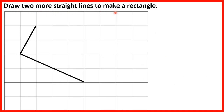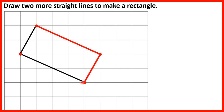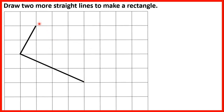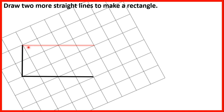Draw 2 more straight lines to make a rectangle. We can imagine that these two points will be 2 of the corners of the rectangle. To get from one point to the other, we can go across 1 and up 2. So if we take this point and go across 1 and up 2, we can see that the other vertex — the other corner of our rectangle — will be here. Then all we need to do is join up our corners, and we have a rectangle because we have 4 right angles and opposite sides are the same length. Turning the page can also make it easier to see how the rectangle will be formed.